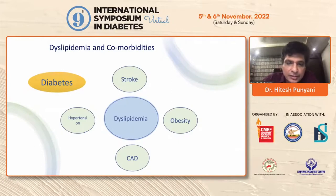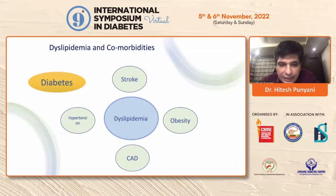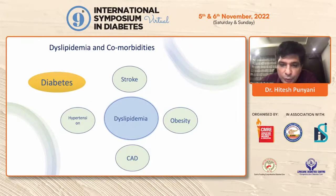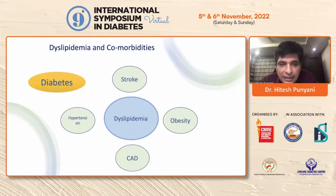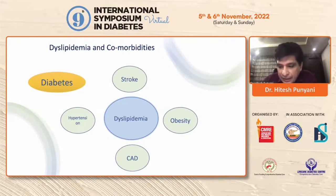This slide shows the various components — diabetes, ASCVD, and dyslipidemia — and how they're all interrelated. With dyslipidemia at the center, you have complications in the form of stroke and coronary artery disease, with hypertension and obesity surrounding them. Dyslipidemia and hyperglycemia work as a fertilizer for this poisonous plant of coronary vascular disease that we see in due course of time.